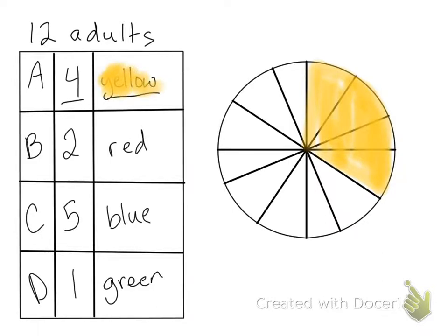So two answered that they liked the second choice. We're going to use red to show choice B. So that looks like that. And that's two twelfths. So this was four twelfths, and this was two twelfths.